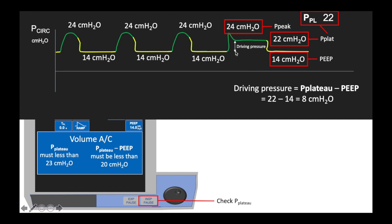So your driving pressure is equal to the plateau minus the PEEP — it's the difference between PEEP and plateau, and represents the pressure it takes to deliver the intended tidal volume. Like I said, that has to be less than 20 in a volume assist control mode. In this case, it's 22 minus 14, so 8. So this patient may be appropriate to switch to the VPAP-ST.